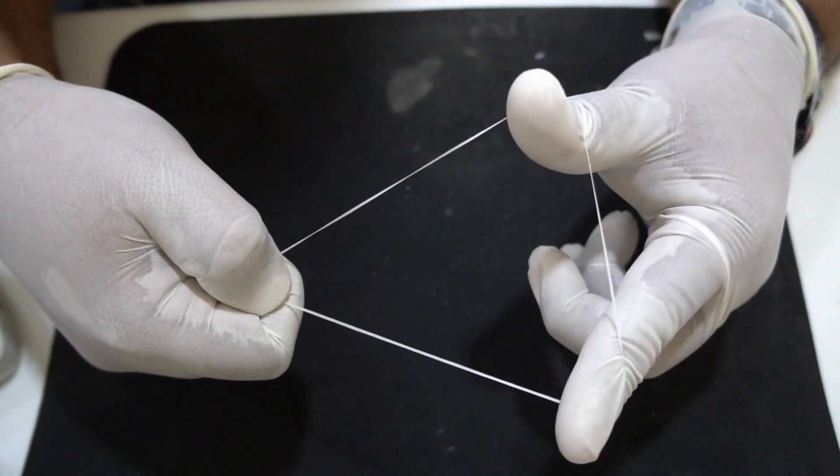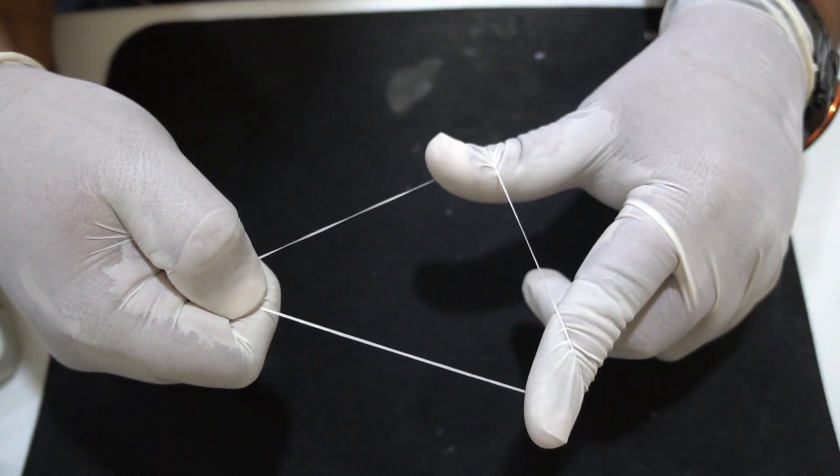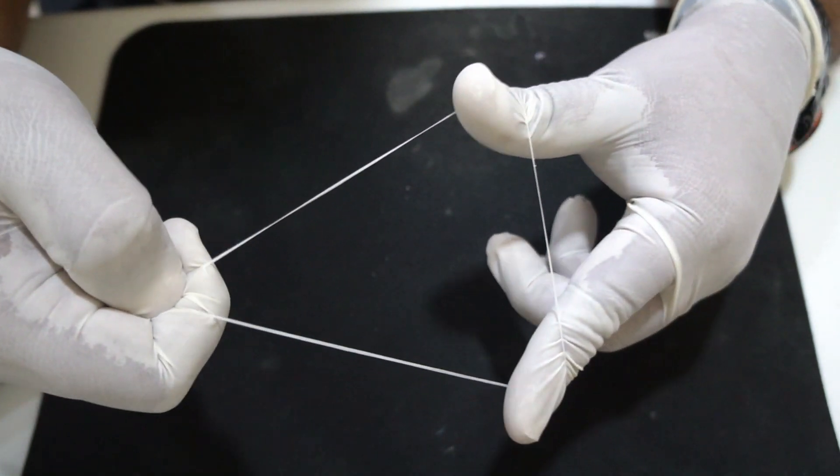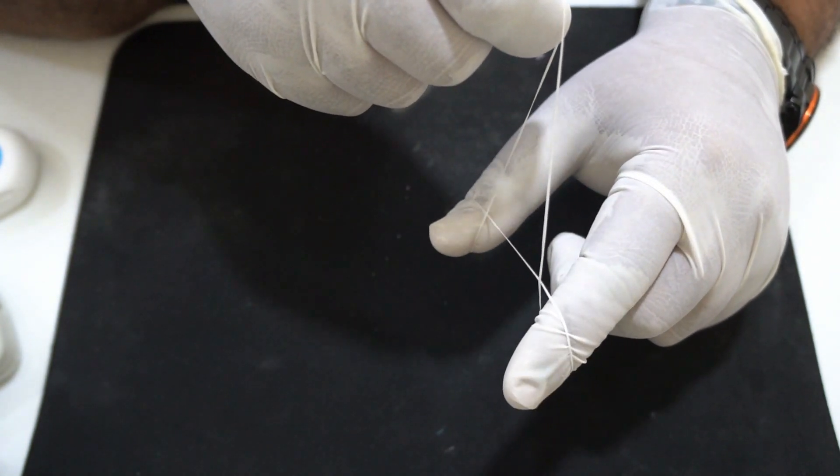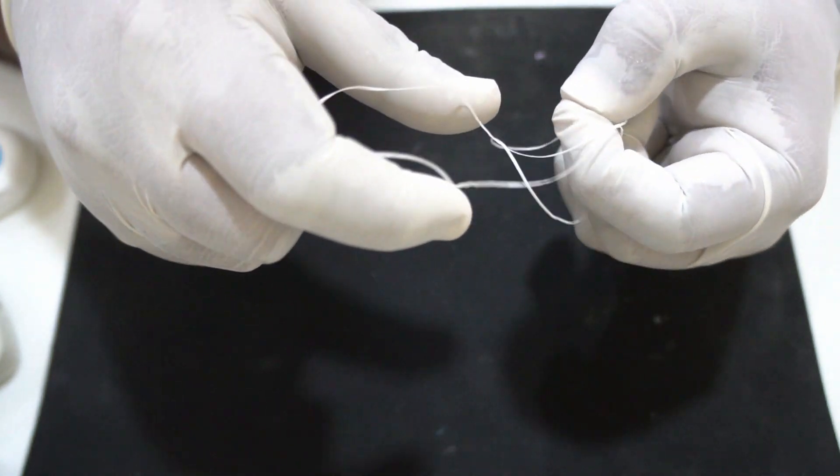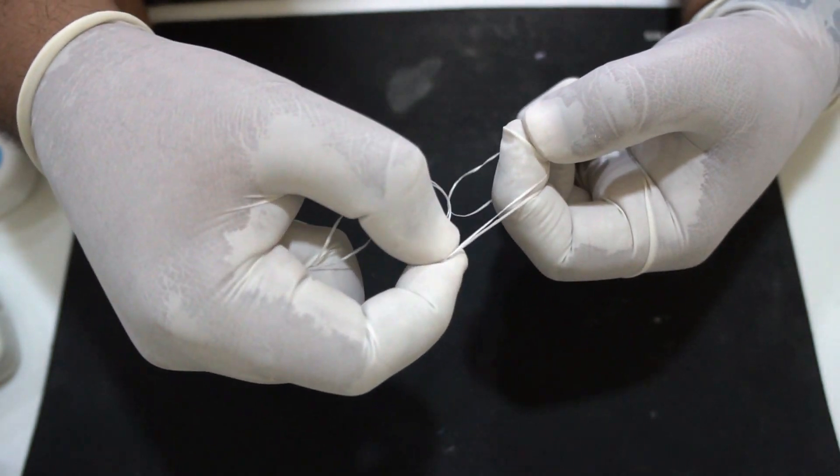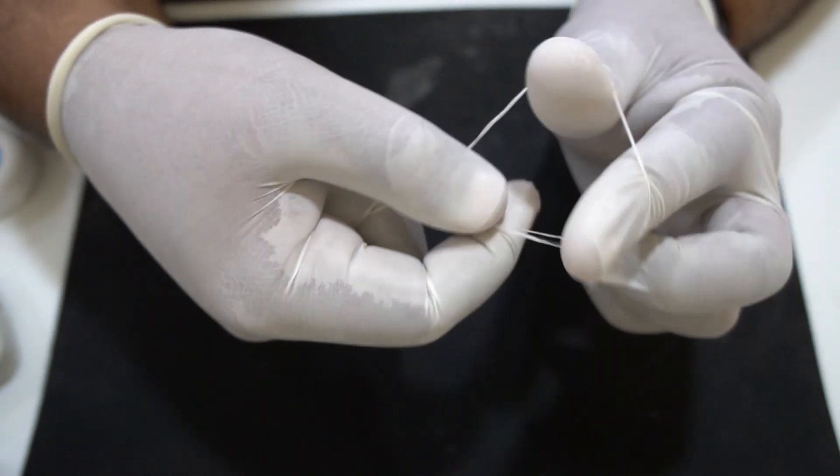On the left hand you should stretch the floss between your index finger and your thumb. Now move the floss from the right side to the left side like this. Join the index finger and the thumb. Move the floss from the thumb to the index finger. Now you have a double thickness stretch of floss.